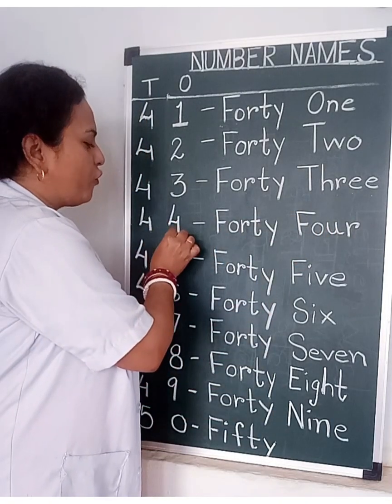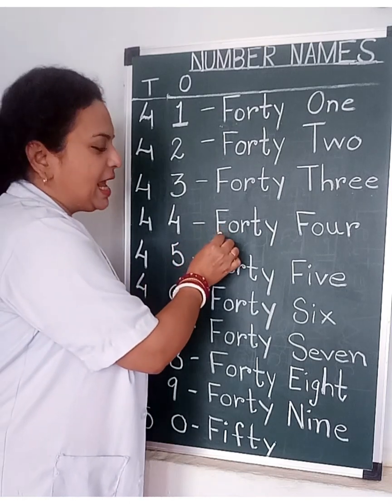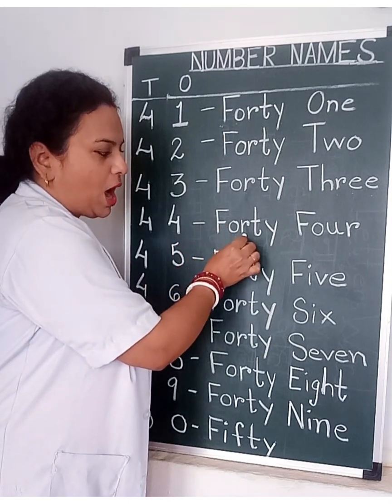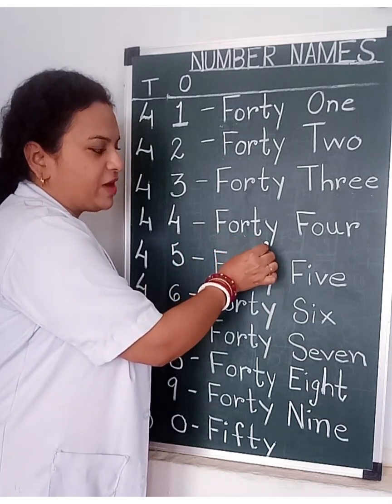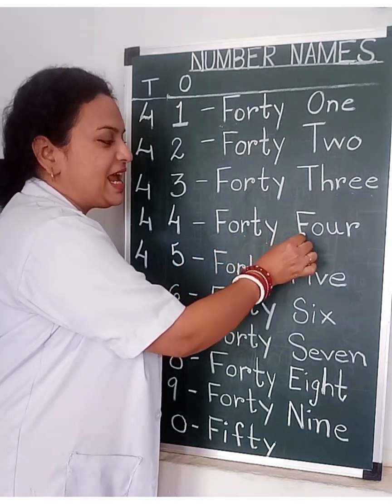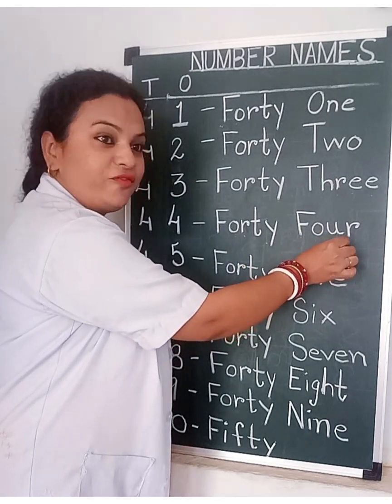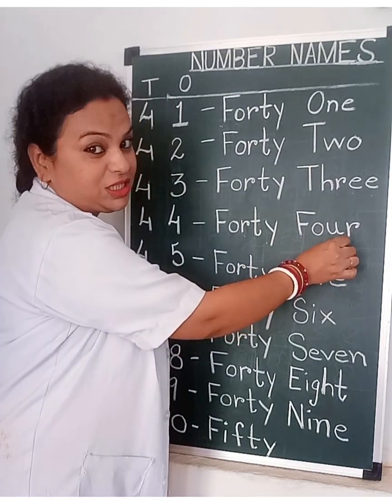4, 4 — 44. F, O, R, T, Y — FORTY. F, O, U, R — FOUR. 44.